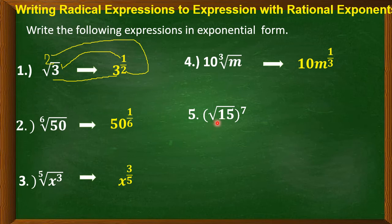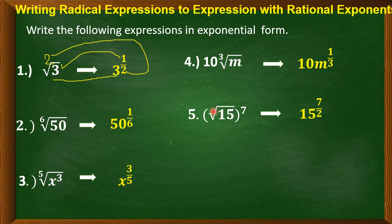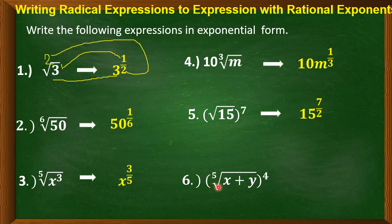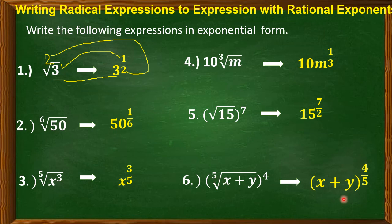Next: the quantity of the square root of 15, to the power of 7. This translates to 15 with an exponent of 7 — and since we have a square root, the index is 2, making 2 the denominator. So the answer is 15 to the power of 7 over 2. Last example: the quantity of the fifth root of x plus y, to the power of 4. We write the quantity x plus y with 4 as the numerator and 5 as the denominator, giving the quantity x plus y to the power of 4 over 5.